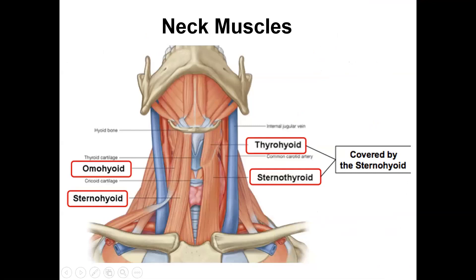A few of the other neck muscles are called the infrahyoid muscles, to distinguish them from the suprahyoid muscles, which are above the hyoid bone. The ones we are interested in for this course are beneath the hyoid bone — the infrahyoid muscles. If you look at the name of each of these muscles, it tells you where the muscle is inserting and originating from.